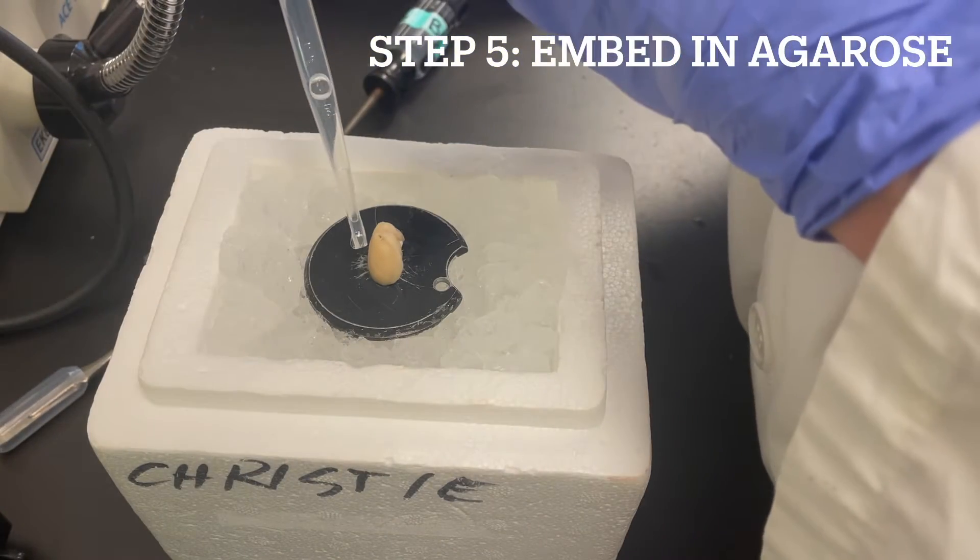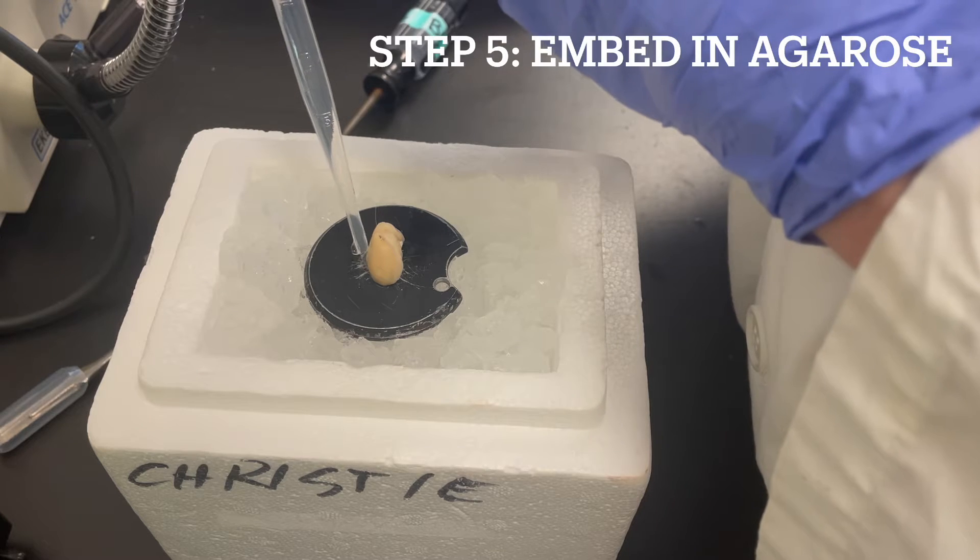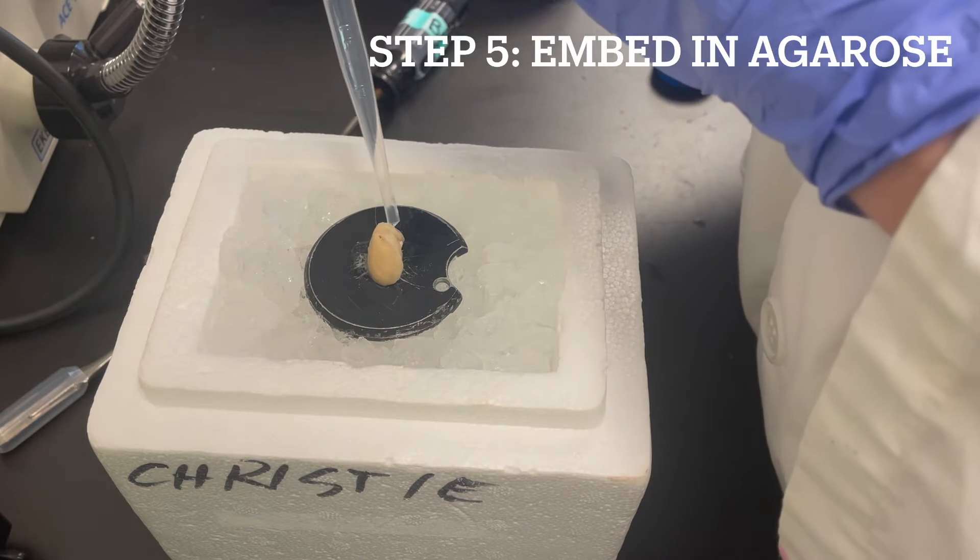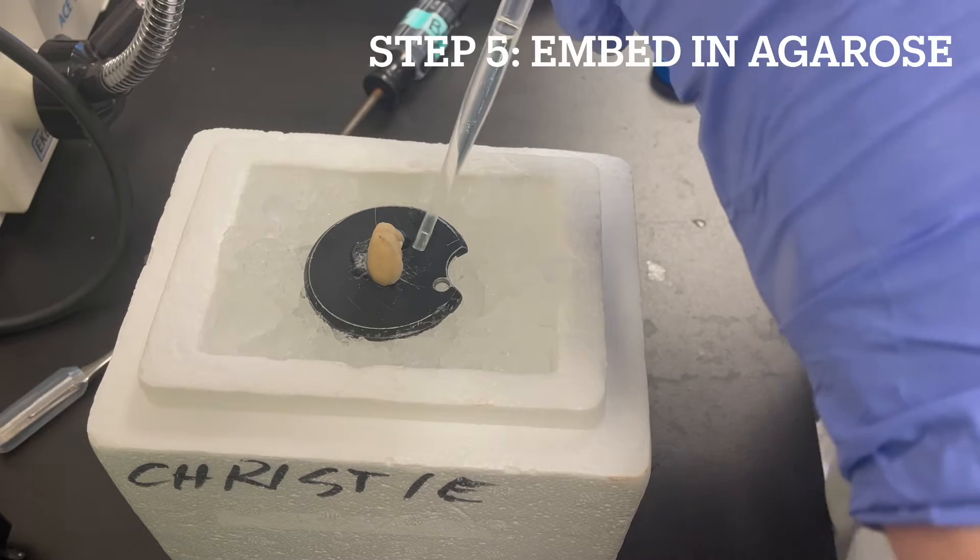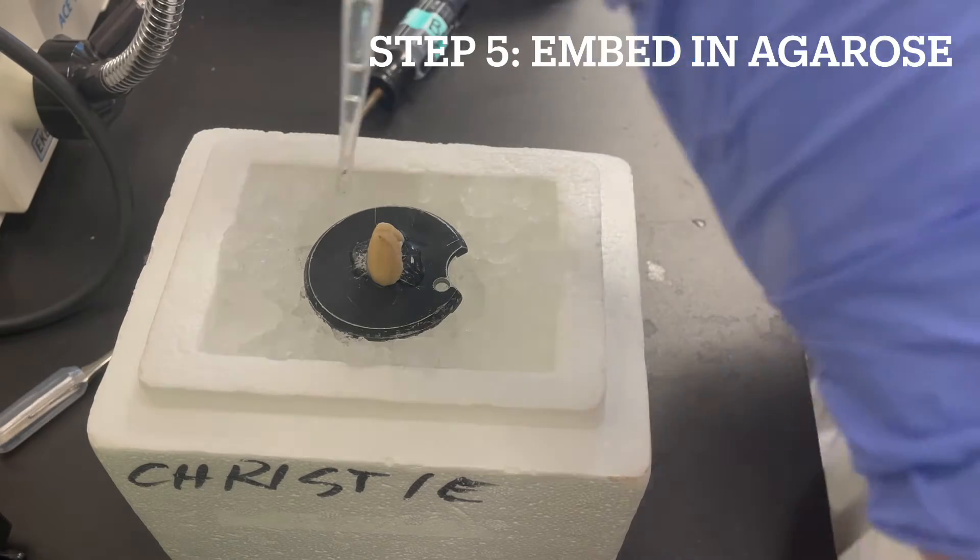Once the super glue has dried and the brain is securely attached to the metal stage, we are going to embed the brain in agarose, which helps guide the blade through the tissue, ensuring precise and smooth cuts.